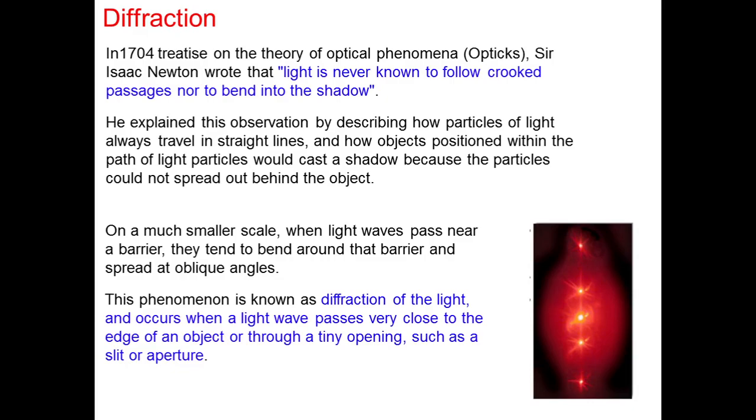So later on Huygens proposed a wave theory of light in which he explained that on a much smaller scale when light waves pass near a barrier or obstacle, they tend to bend around the corners and spread at oblique angles. And this bending of light at the obstacle or corner and spreading at oblique angles, this phenomenon is called diffraction of light.